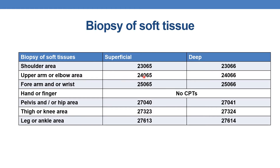For biopsy of soft tissue of upper arm or elbow area, for superficial biopsy you need to report 24065, and for deep biopsy you need to report 24066. When it comes to biopsy of soft tissue of forearm and/or wrist area, for superficial biopsy the CPT is 25065, and for deep biopsy it is 25066. Note that there are no CPTs for biopsy of soft tissue in the section of hands and fingers.